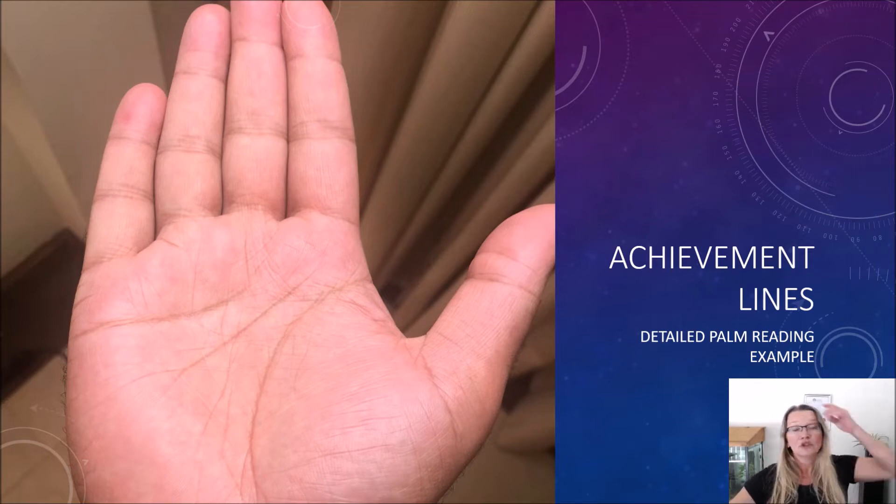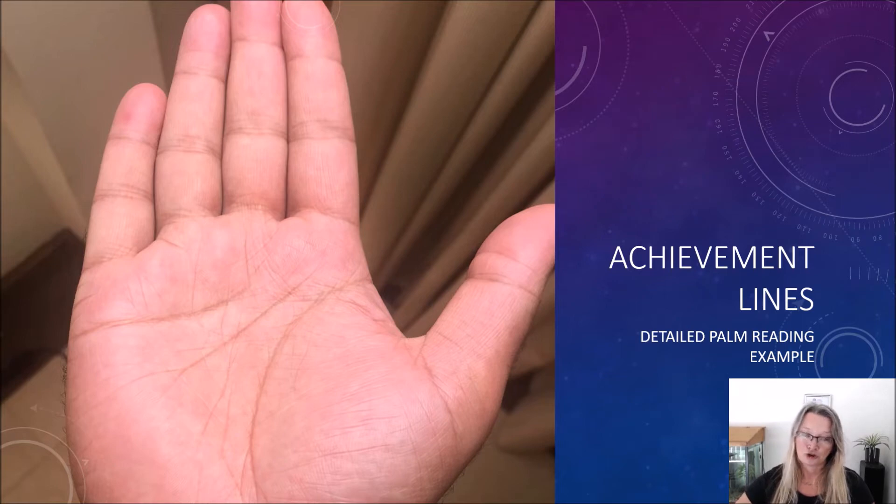However, not everybody has these lines. So don't worry if your hands don't have achievement lines. It might just mean that your skin is not sensitive enough to show every little detail. If you have slightly coarse or tough kind of skin, you might only have a few lines. So your hands do not absorb every sort of part of your life. It doesn't mean that you can't have some kind of achievement if you are missing these lines.